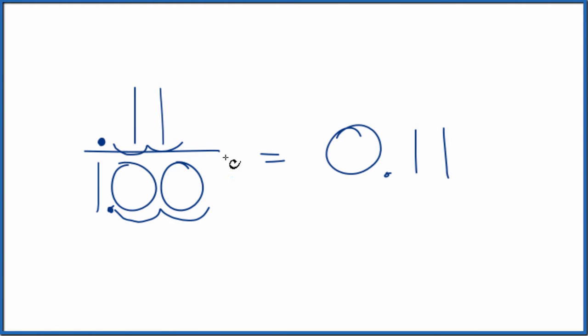So the fraction 11 one-hundredths equals the decimal 0.11, just like we found with our calculator or dividing longhand. This is Dr. V, converting the fraction 11 one-hundredths to a decimal. Thanks for watching.